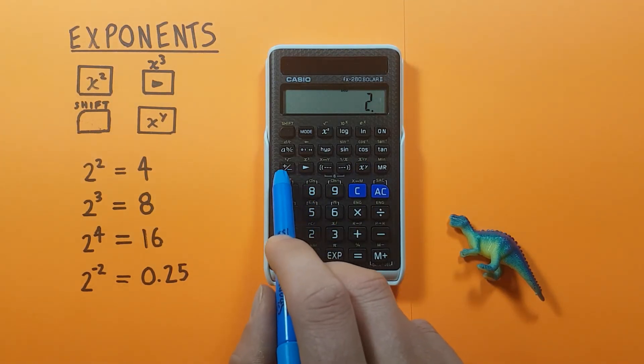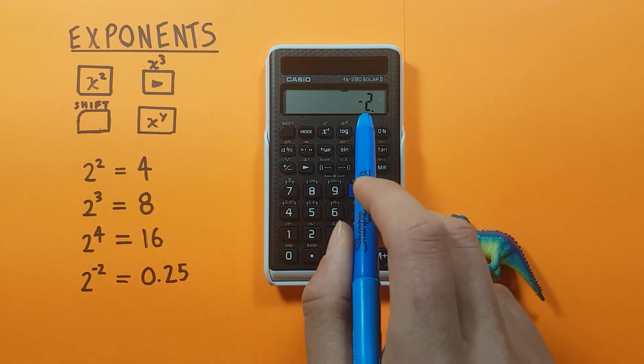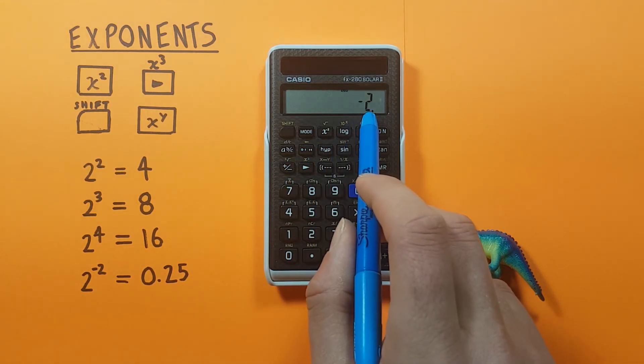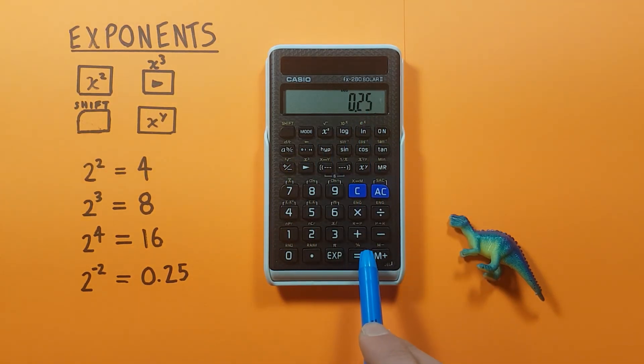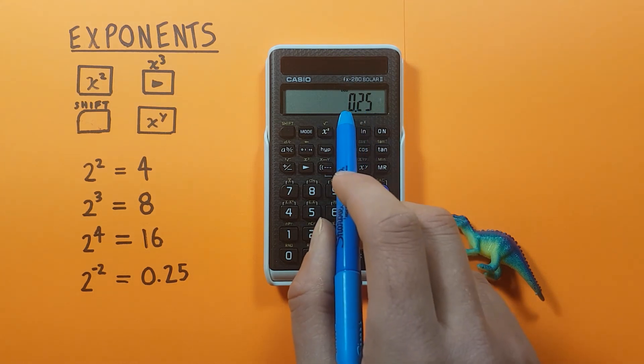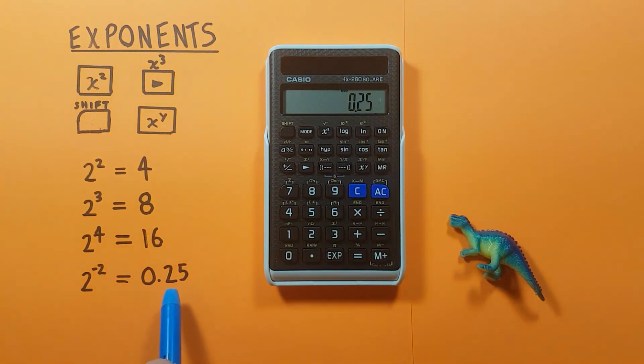And then this positive negative key, which changes our exponent from a positive to a negative, and then we press equals, and we get 0.25, which is the correct answer.